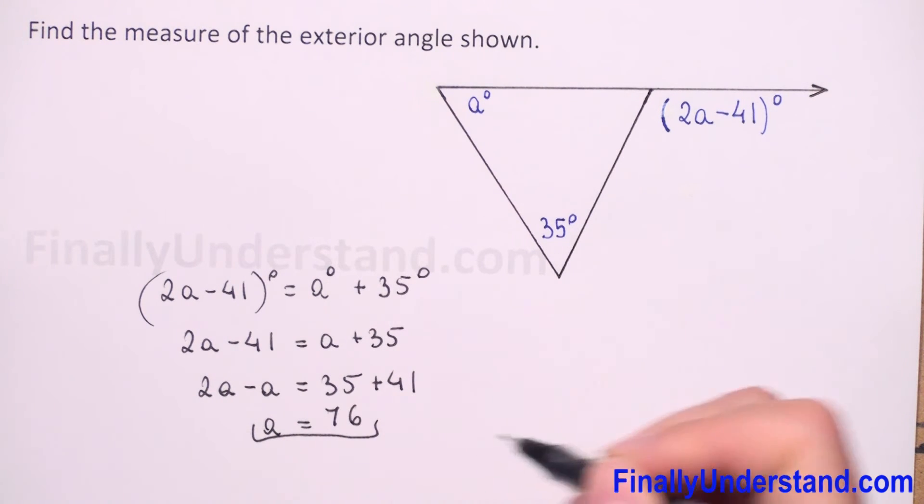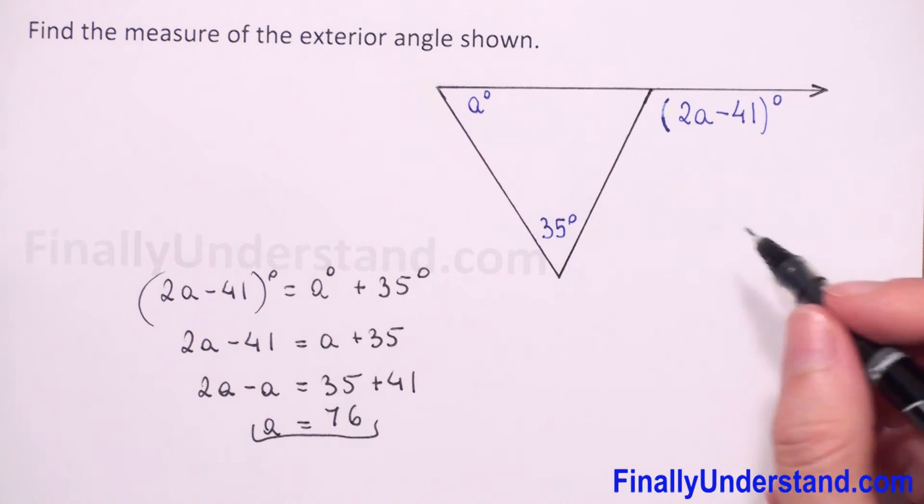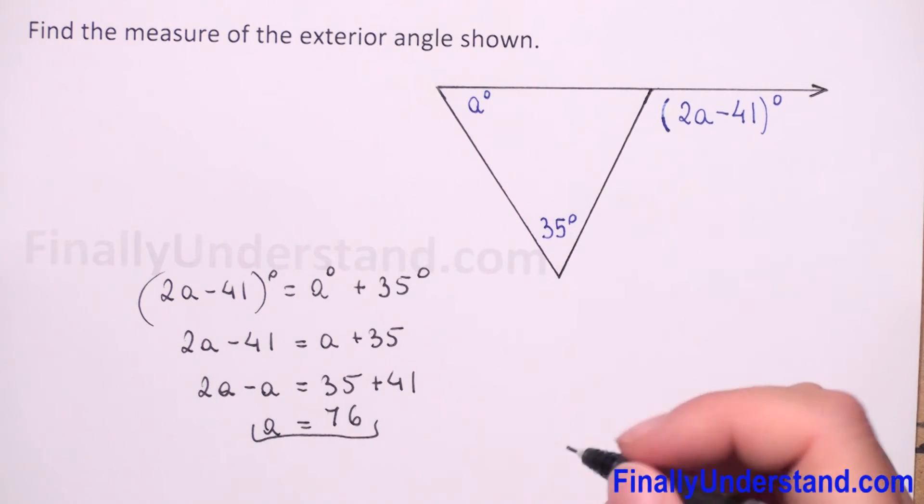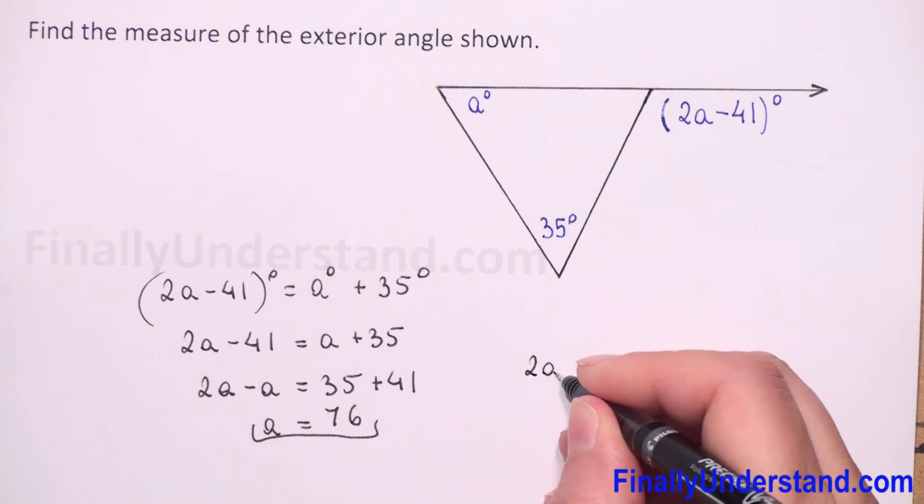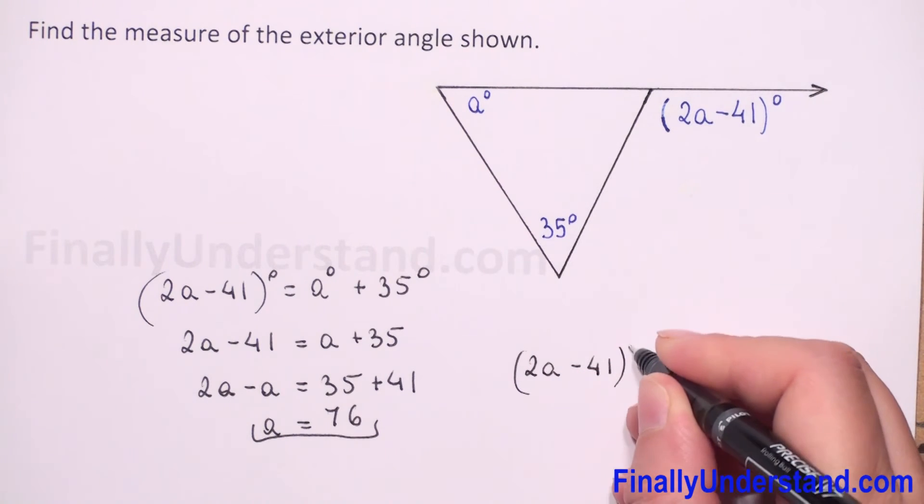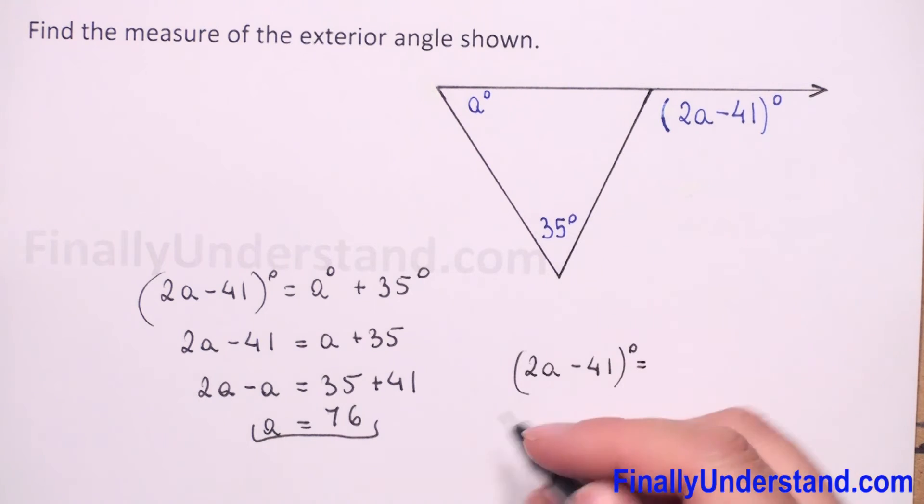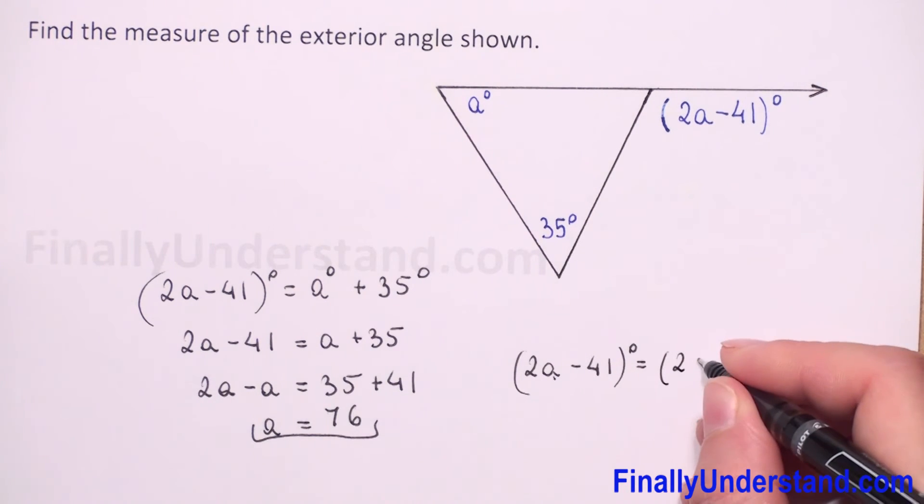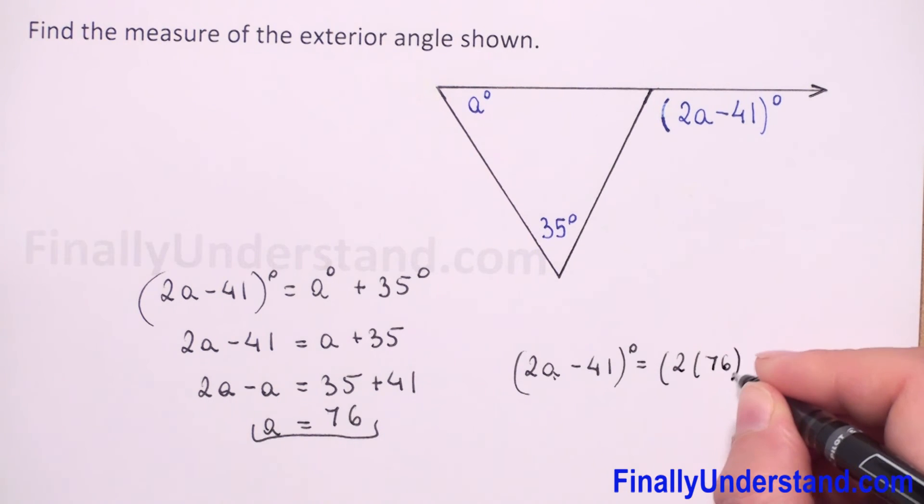We found a, now we can find the measure of this exterior angle. So 2a minus 41 degrees is equal to, now I will substitute a by 76, so we have 2 times 76 minus 41 degrees.